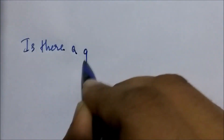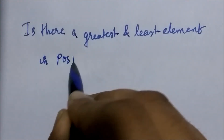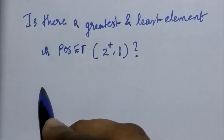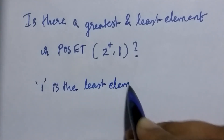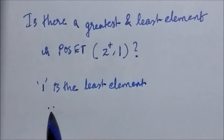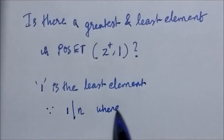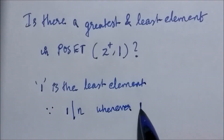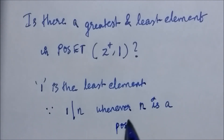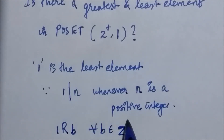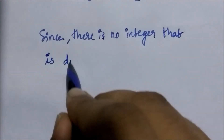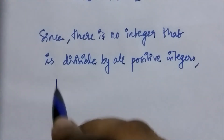Let's take a question: is there a greatest and least element in the poset (Z+, divides)? The set is the set of positive integers and the relation is the divides relation. We can say that 1 is the least element because 1 divides n whenever n is a positive integer — 1 is related to b for all b in Z+. However, there is no integer that is divisible by all positive integers, and hence there is no greatest element.